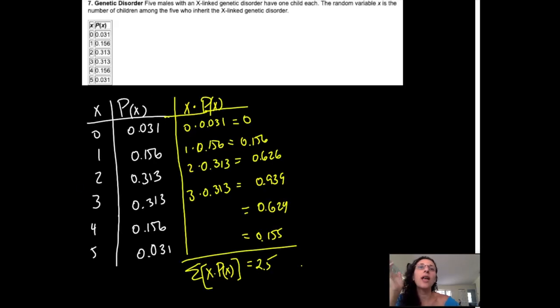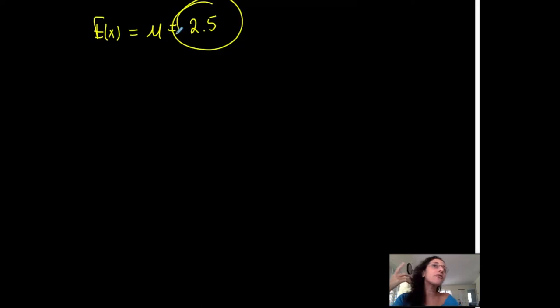So what does that mean? On average, out of a group of 5 males, we get an average of 2.5 of them with this genetic disorder. I'm going to round that up to 3. On average, 3. That's what that means.